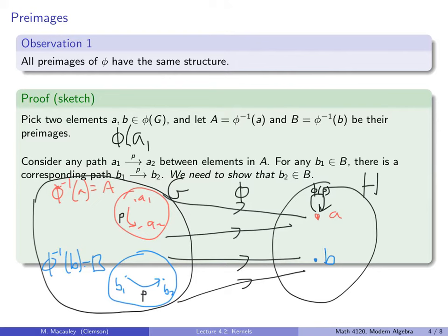Clearly, G is partitioned by preimages of phi. Every single element in G gets mapped somewhere in H, and therefore it lies in some preimage — namely the preimage of that element. So every element in G lies in some preimage. G is partitioned by the preimages, and we just showed that all preimages have the same structure. Does this sound familiar? What does this remind you of? Well, if you said cosets, you're right.